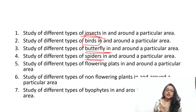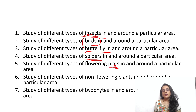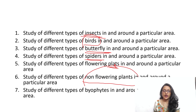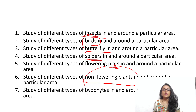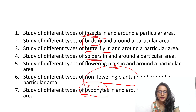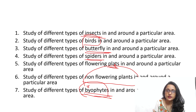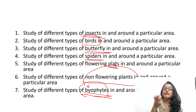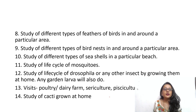Fifth is the study of different types of flowering plants in and around your area — click photos and identify them. Sixth is non-flowering plants: if there are bryophytes, pteridophytes, or gymnosperms nearby, you can photograph and study them. You can study bryophytes, pteridophytes, and gymnosperms each as separate focused projects depending on what plants are available in your local area.